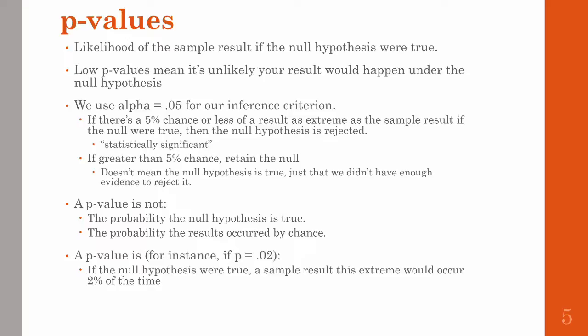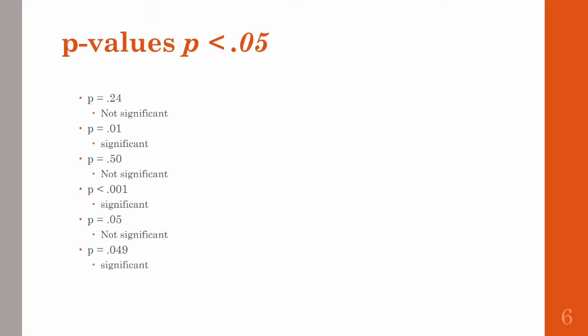Think of it this way: if the null hypothesis were true, a sample result being this extreme would occur 2% of the time, assuming our p-value is 0.02. So it's the probability of seeing data that extreme if the null were true. 0.05 is our mark — if it's below 0.05 it's significant, if it's not, then it's not significant. So a p-value of 0.24 would not be significant. 0.01, however, is less than 0.05, so that would be considered significant.